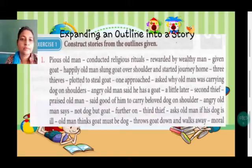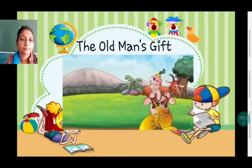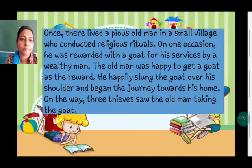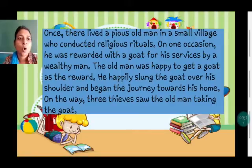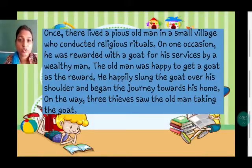Now exercise 1 — construct stories from the outlines given. This is expanding an outline. I have written the story out of the outline given and I have given the heading: 'The Old Man's Gift.' Some of the words I have to pick exactly the same as the outline, but don't make it fill-in-the-blanks — you need to elaborate and expand that outline.